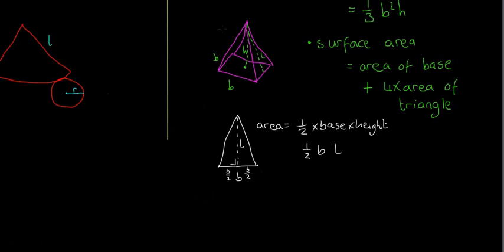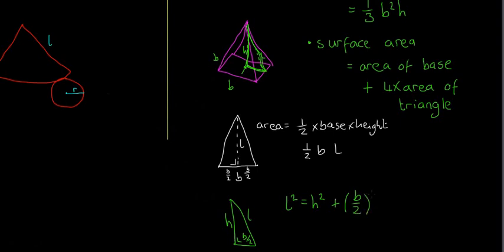To find l, we use another right-angled triangle inside the pyramid: the height h, the base of B over 2 going across to the edge, and l as the diagonal. Using Pythagoras: l squared equals h squared plus (B over 2) squared, which is B squared over 4. Solve for l, and then you can find the area of each triangular face.